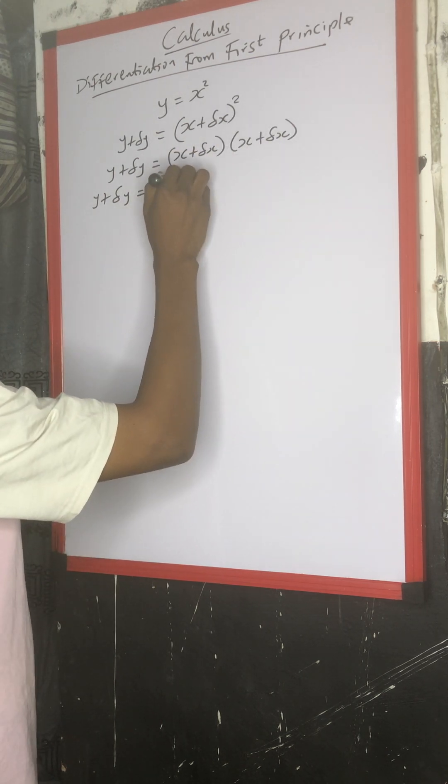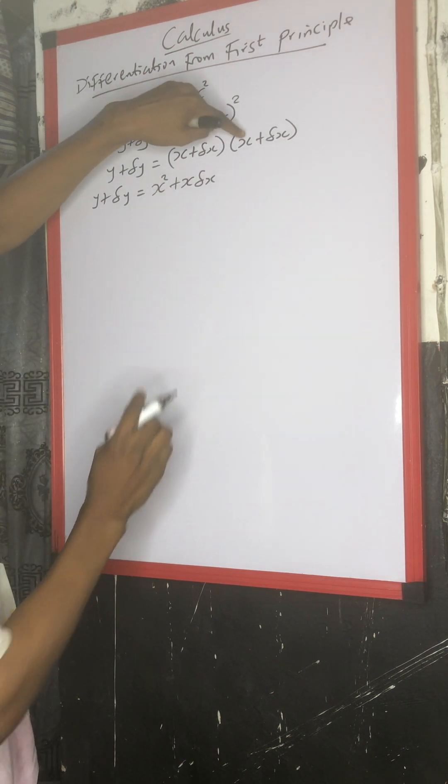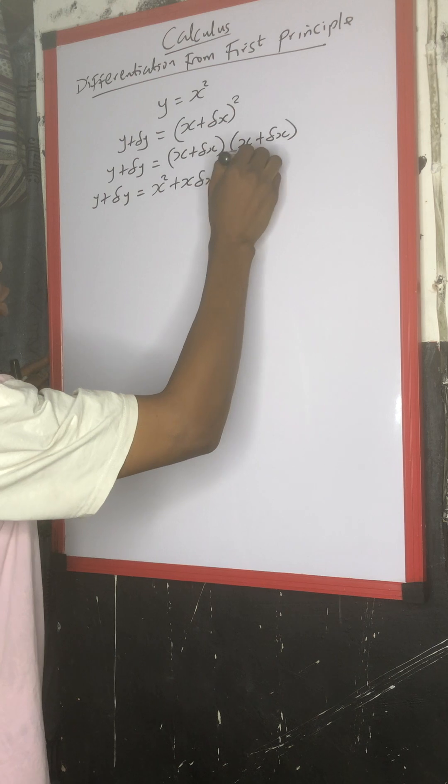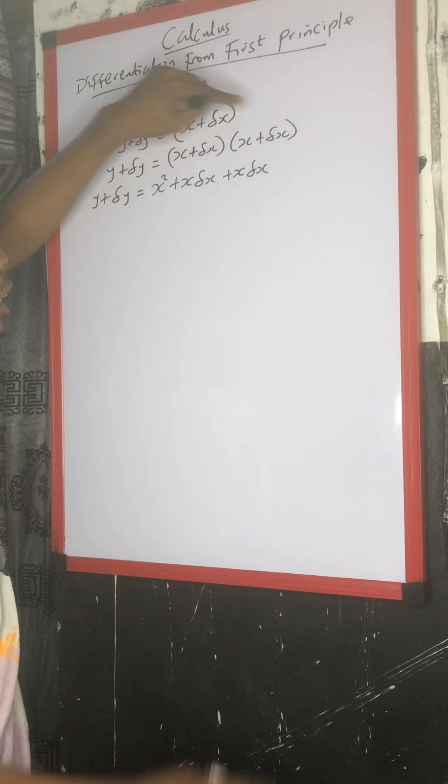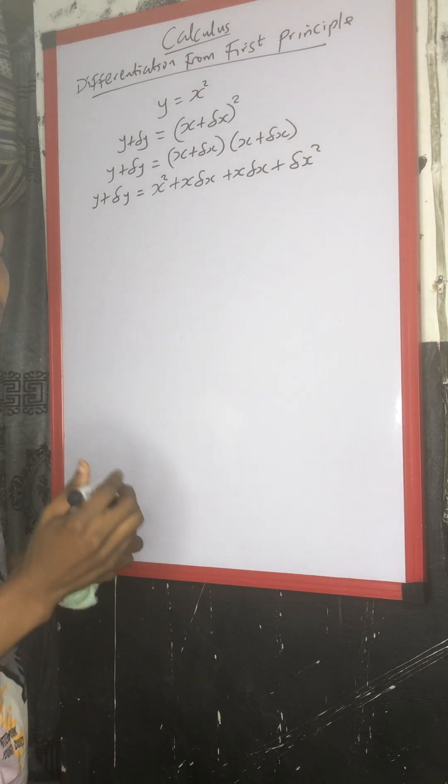Then change in s times s, we have s change in x. Change in s times change in s will give us change in s squared. Then after that, don't forget,